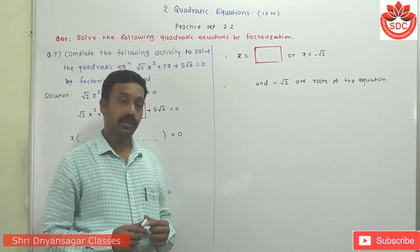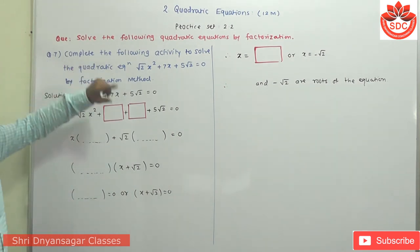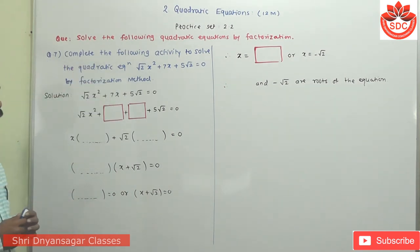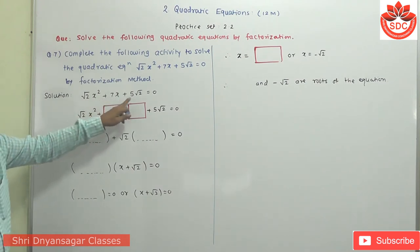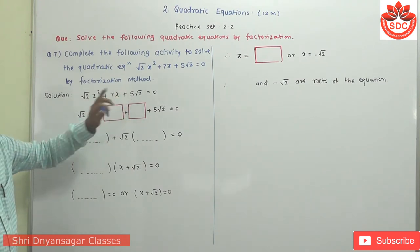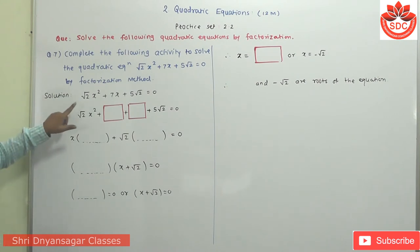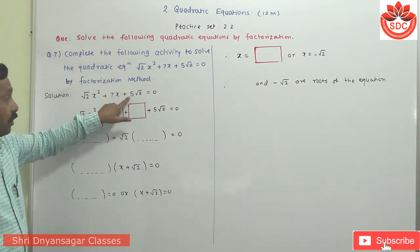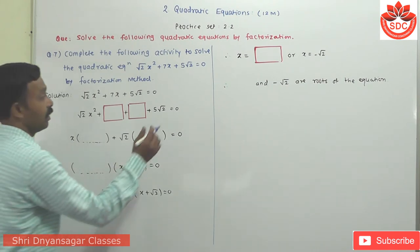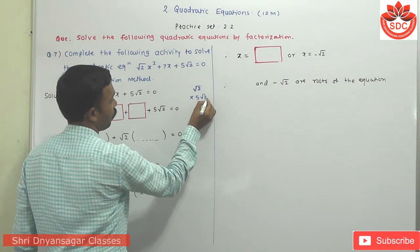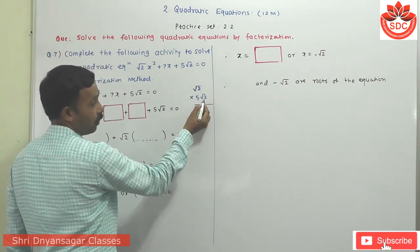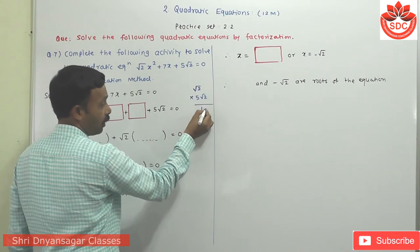Question number 7 — complete the following activity. To solve the quadratic equation √2·x² + 7x + 5√2 = 0 by factorization method. This is in standard form. We find the product of A and C: √2 × 5√2 = 5 × (√2 × √2) = 5 × 2 = 10. Then find factors of 10 such that their addition is the middle term 7.